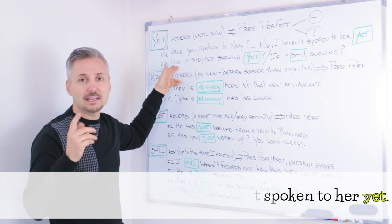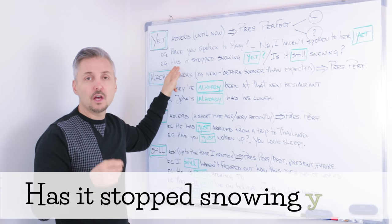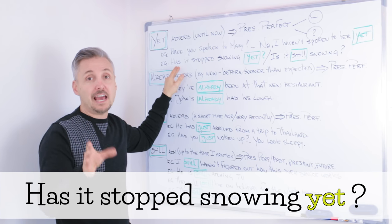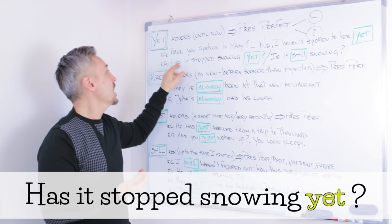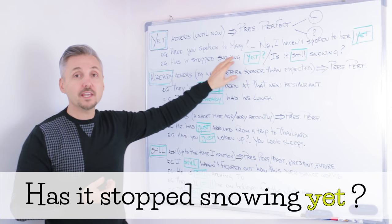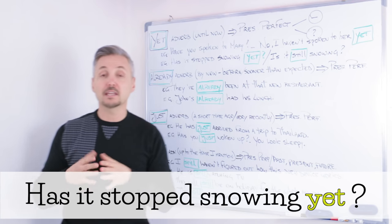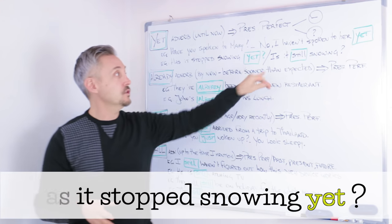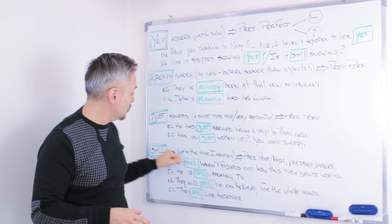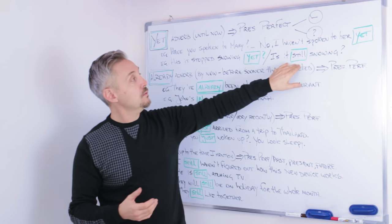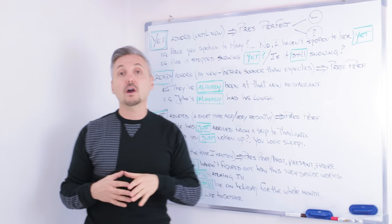Let's look at the second example that I gave using yet. So in the question, has it stopped snowing yet? It's the same as saying is it snowing yet? As you can see that still, I'm going to talk about it later, still we use also with the Present Continuous.